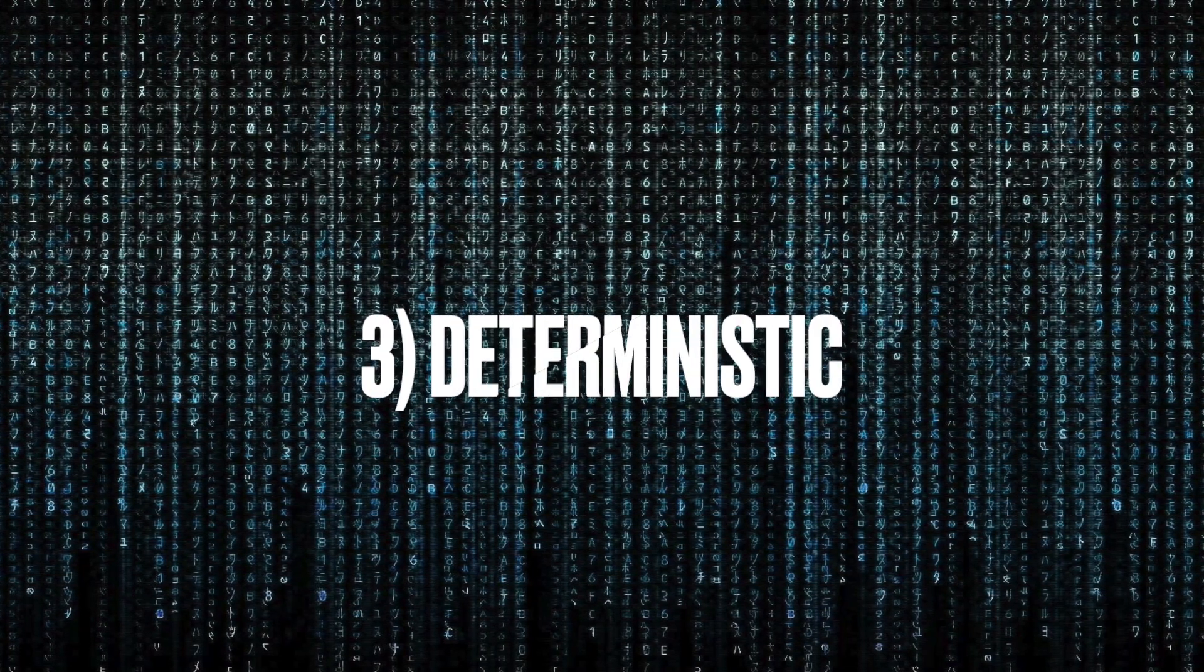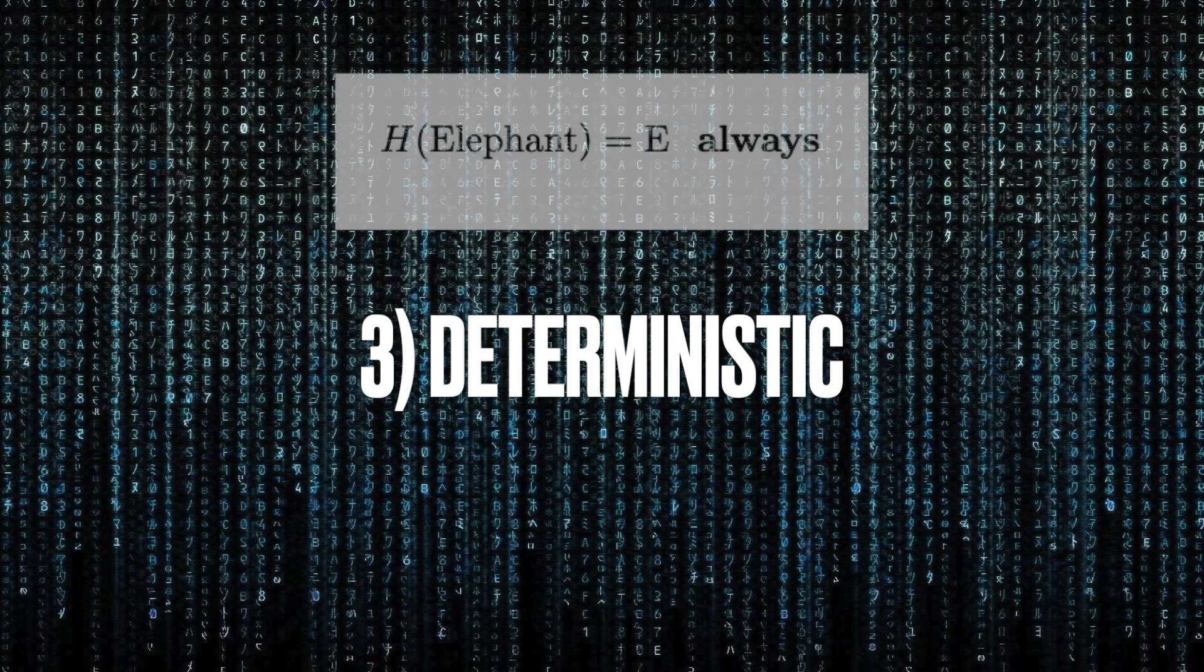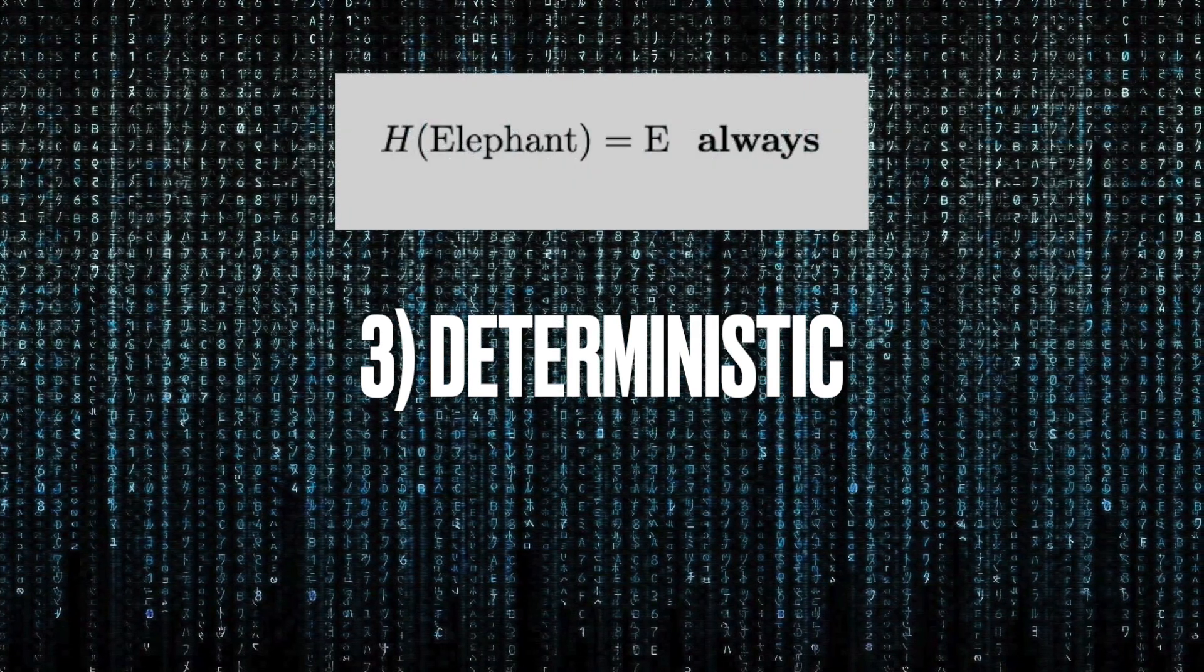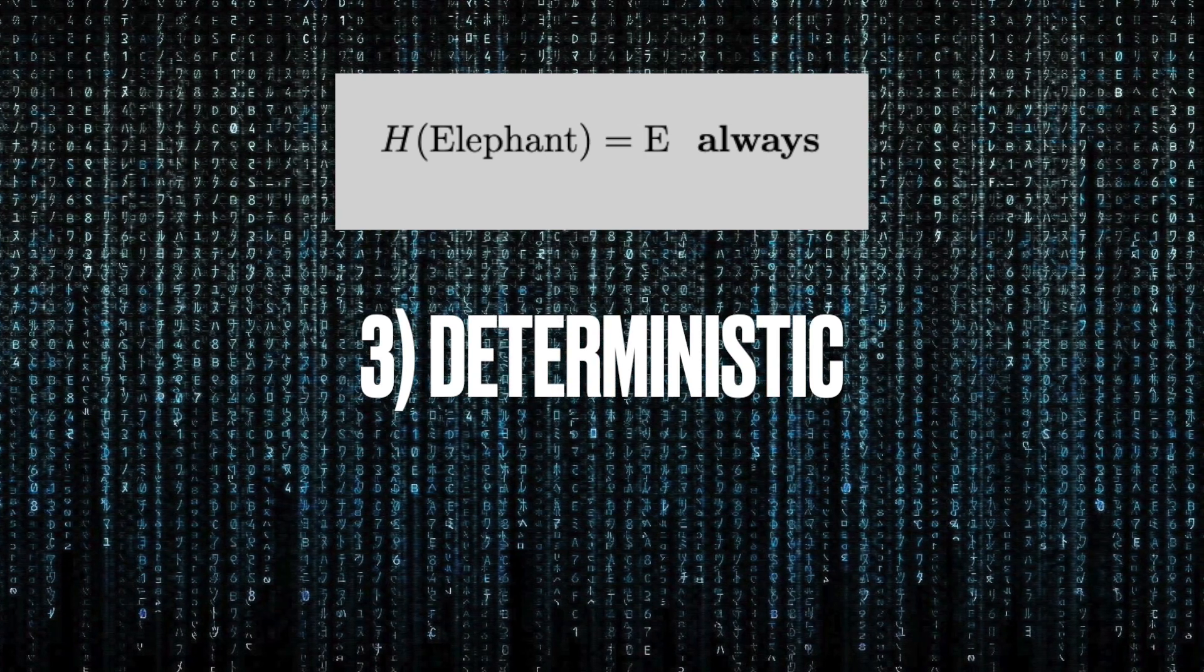Thirdly, hashing has to be deterministic. This means that if we use the same hash function on the same data point, we will always result in the same hash. There can be no room for chance or probability in a hash function.